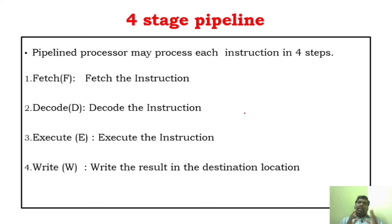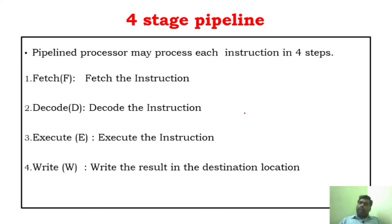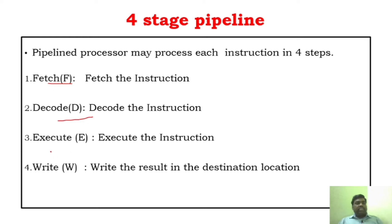Normally, if you take any particular instruction, there will be four stages. As I said, two stages — fetching and execution — but even in execution itself, you need to get the information of the source operand, destination operand, and what the instruction is. It has to fetch all that information and then execute it. So as a whole, if you see, for executing any particular instruction, there will be four phases: fetch phase, decode phase, execute phase, and write phase.